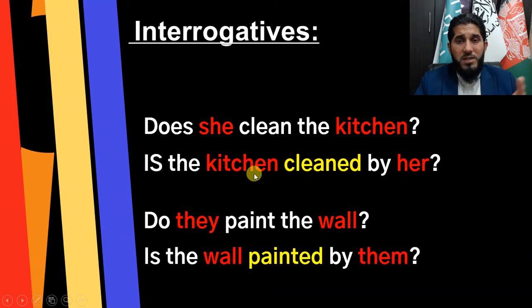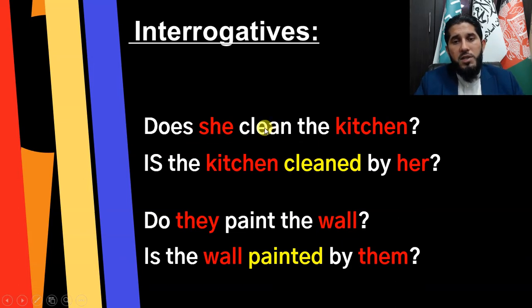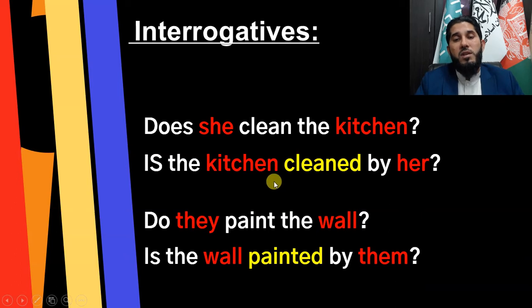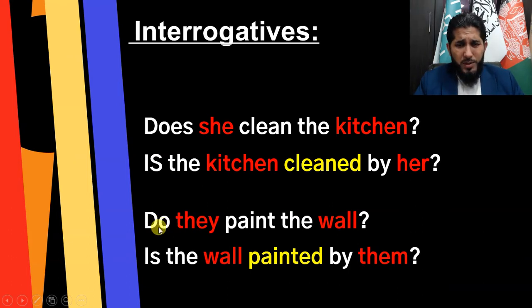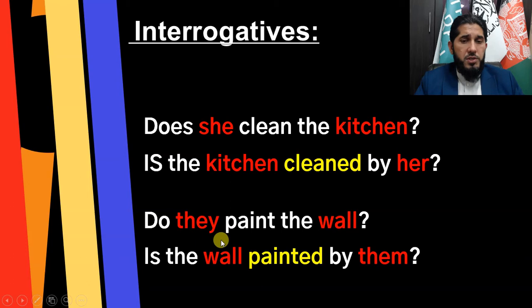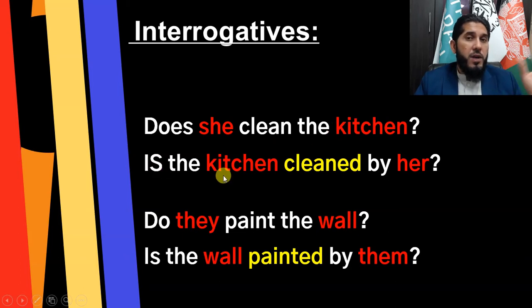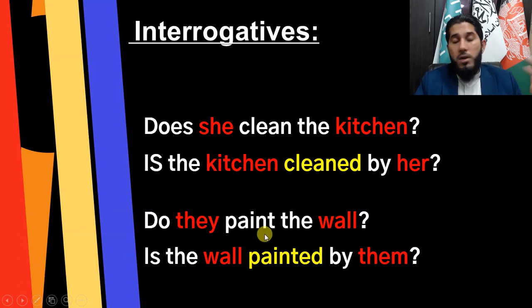To change 'Does she clean the kitchen?' to passive, instead of 'does' at the beginning, use a to-be verb: 'Is the kitchen cleaned by her?' Here 'she' is the doer but 'the kitchen' is the receiver of the action, hence passive. Another example: 'Do they paint the wall?' becomes 'Is the wall painted by them?' For short answers: 'Does she clean the kitchen? Yes, she does / No, she doesn't.' In passive: 'Is the kitchen cleaned by her? Yes, it is / No, it isn't.' Similarly: 'Do they paint the wall? Yes, they do / No, they don't' becomes 'Is the wall painted by them? Yes, it is / No, it isn't.'